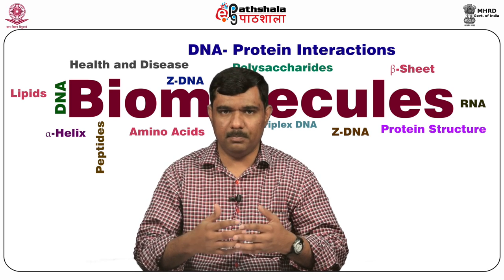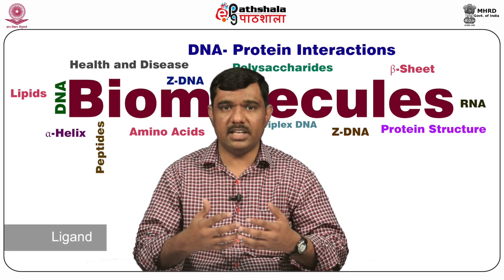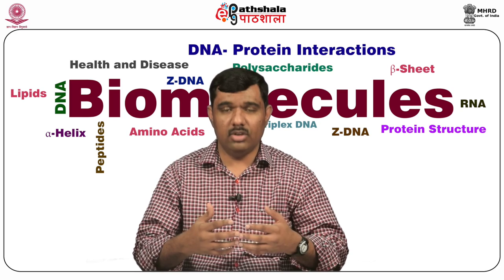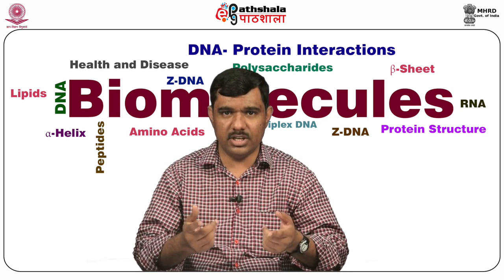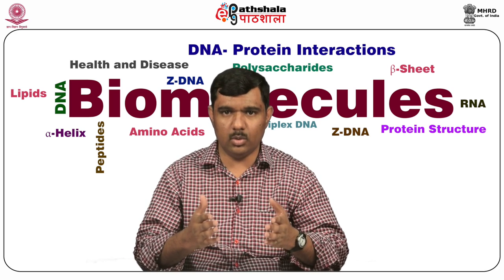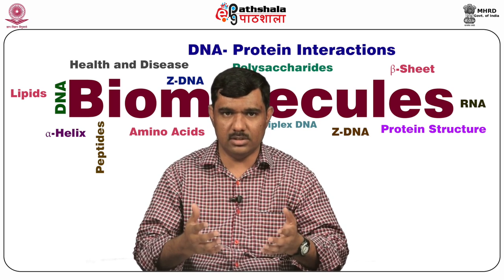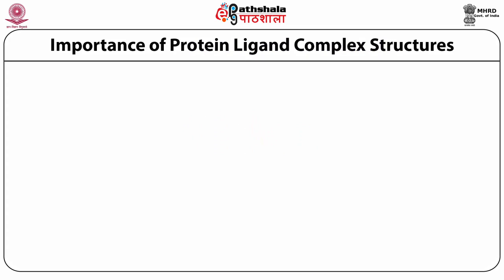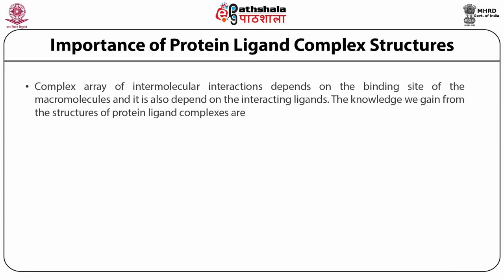So how do we define a ligand? A ligand can be defined as a molecule which can trigger a conformational change in a protein or any other macromolecule, which leads to an array of biological signals. The importance of protein-ligand complexes: complex arrays of intramolecular interactions depend on the binding site of the macromolecules and also on the interacting ligands.